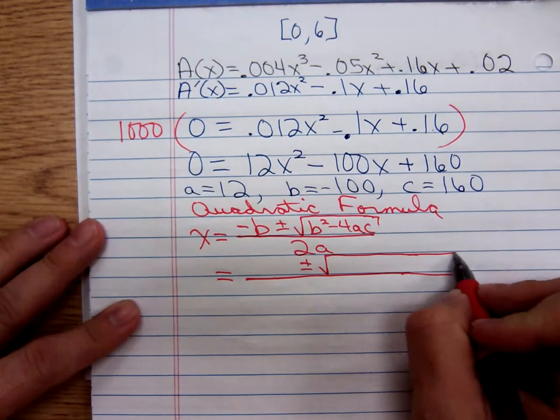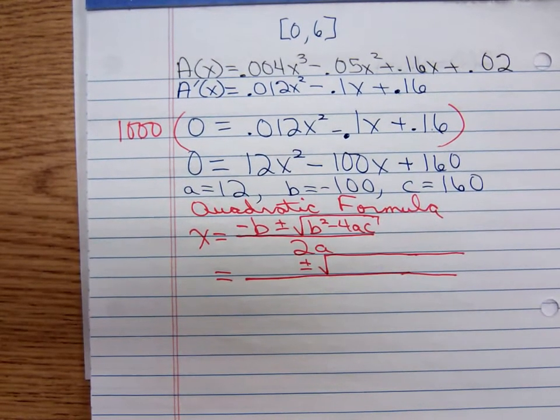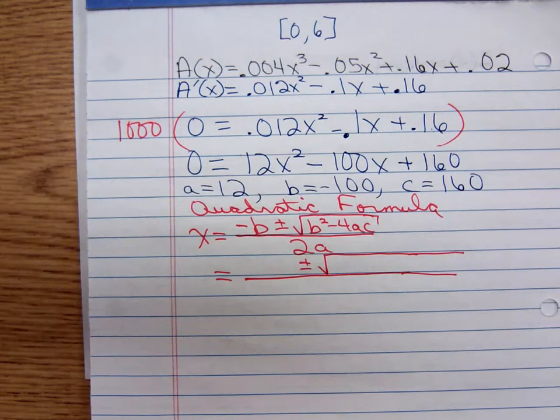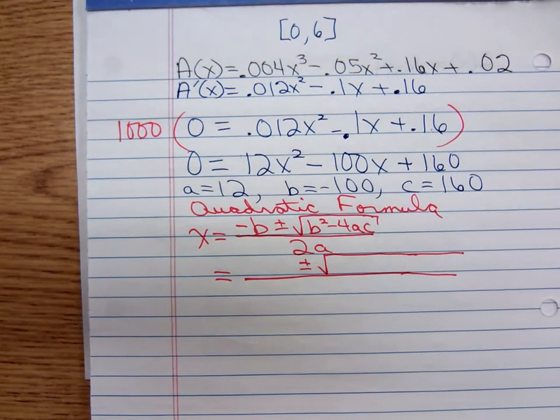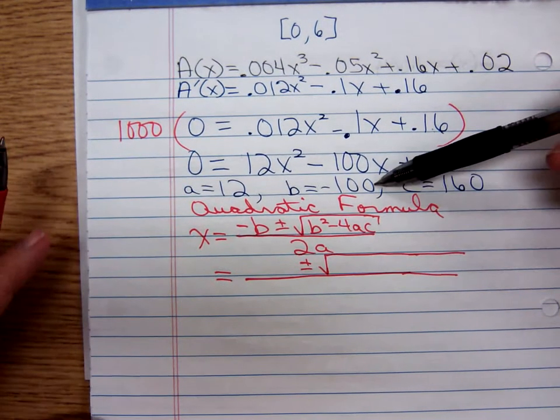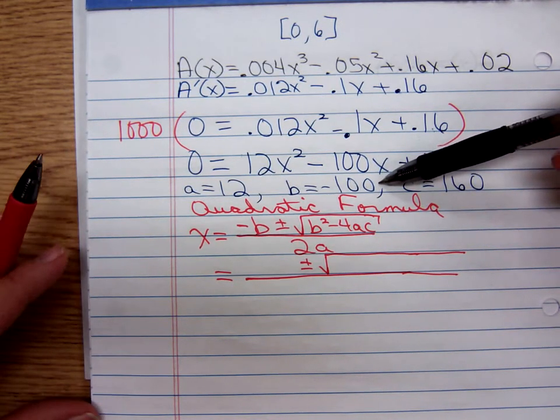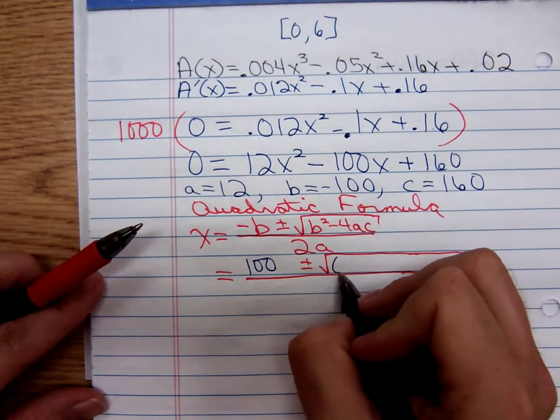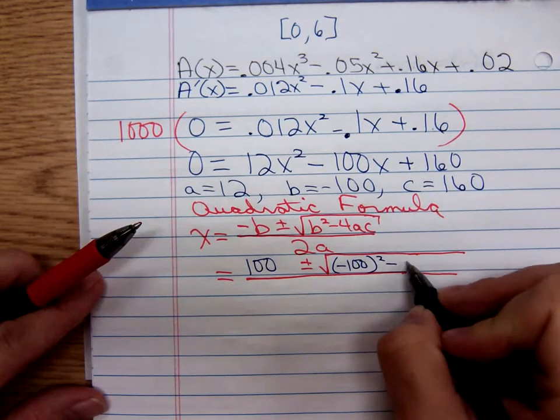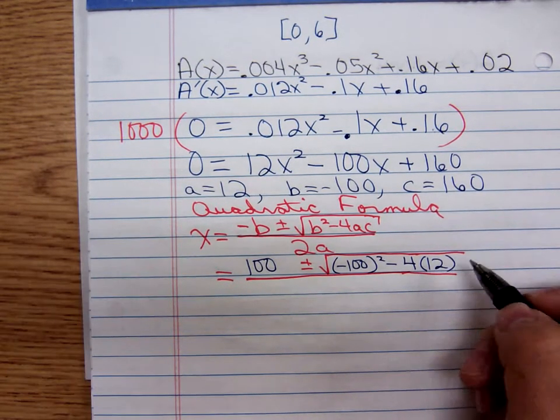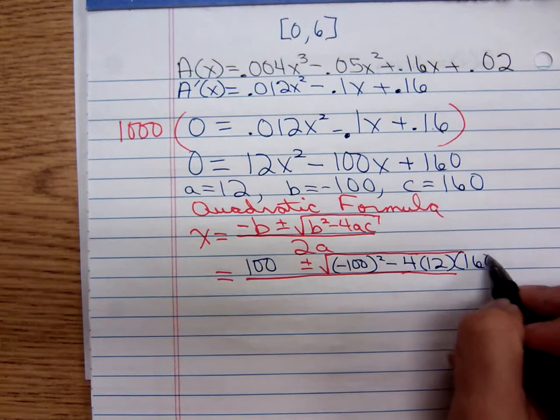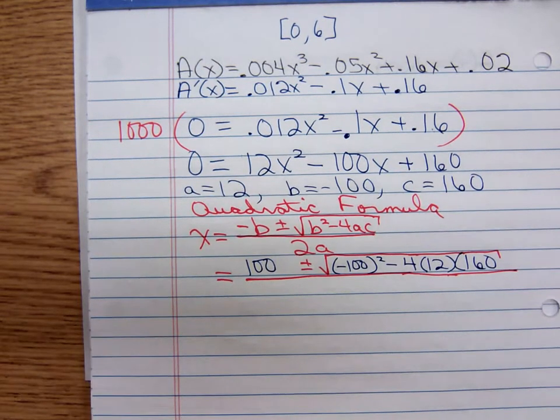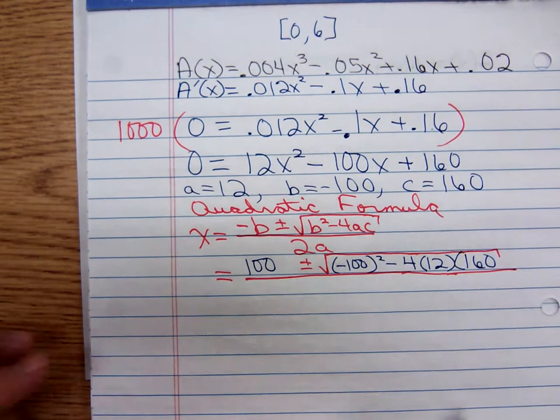At 1325 online, when they watch these videos, if they watch them, they're going to see the colorful repartee that they're missing by not taking it face to face. So negative b, what's that going to give me? Positive 100 plus or minus the square root of b squared, that's negative 100 squared, minus 4 times a times c, all over what's my denominator? 2 times 12, which is 24.